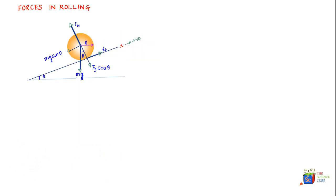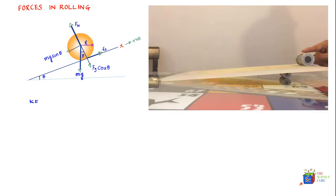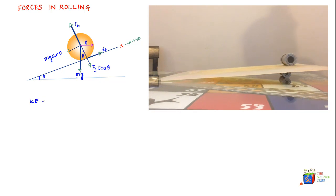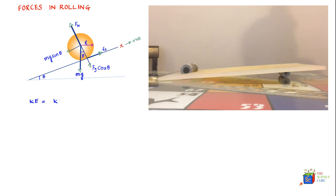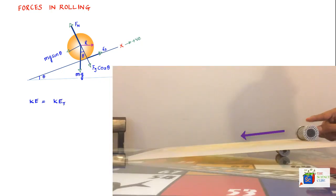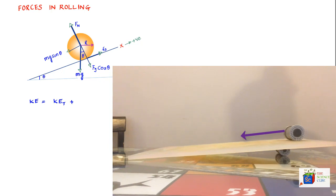Welcome back to the second lesson of the chapter on rolling. Before we analyze the forces in rolling, let's understand the kinetic energy of a body which is rolling. The kinetic energy of a rolling body is composed of two parts: one attributable to kinetic energy on account of translational or linear motion, and the other associated with the rolling or rotating action.